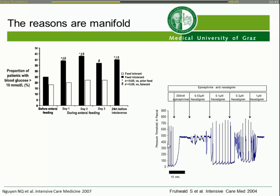Catecholamines also affect motility. This slide shows normal peristalsis of a guinea pig small bowel segment; when you give epinephrine, the bowel segment is paralyzed. Neostigmine can restore peristalsis, but only at low dosages — when you increase the dosage, paralysis returns due to spastic contractions.